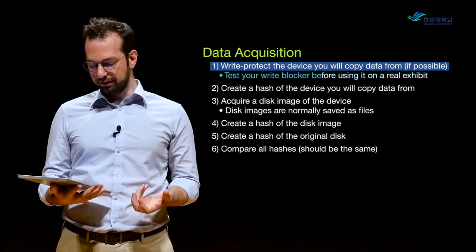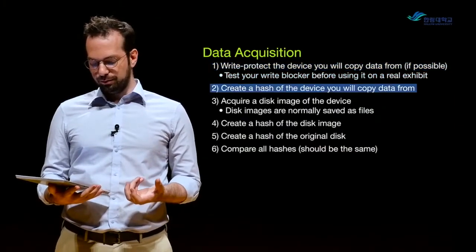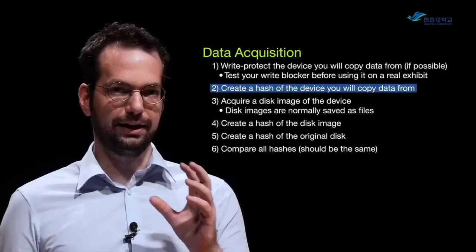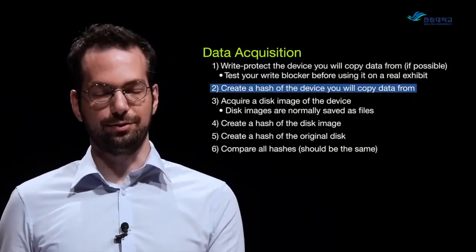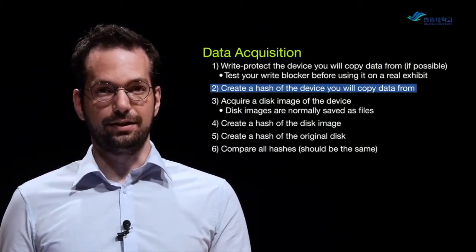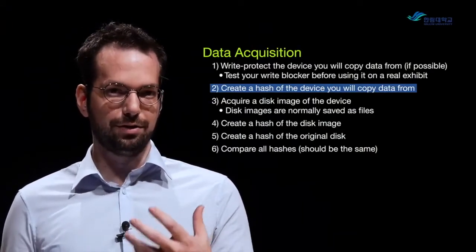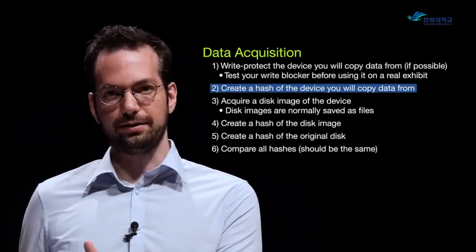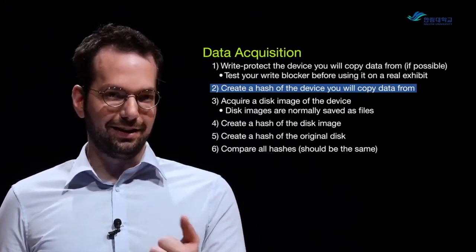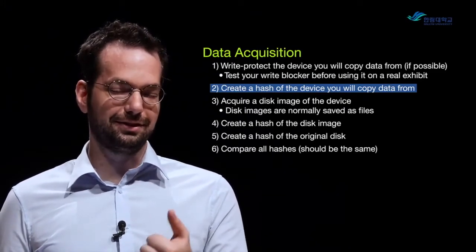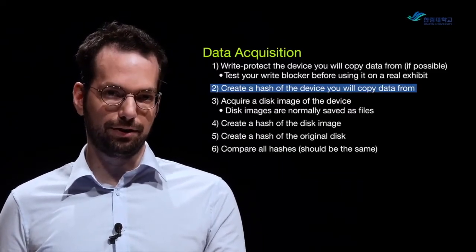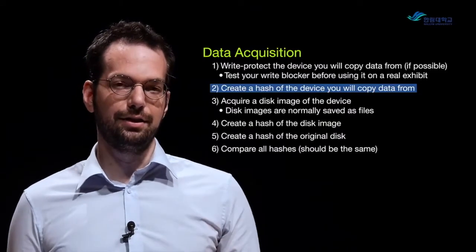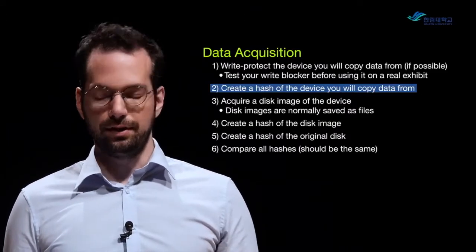Once we actually connect the write-blocker, we need to make sure that we create a hash of the original device — a hash value for the suspect or victim's data — to ensure that we know what the state of the data was before we access it and after we access it. Connect the storage device to a write-blocker, either hardware or software, and then make a reference hash value so you know whether it changes or not.